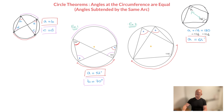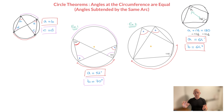Now remember, since angle A and angle B were both angles at the circumference subtended by the same arc, we can use the theorem we saw earlier to state that B is also equal to 64 degrees. And there we go. Remember: angles at the circumference of a circle are equal if they're subtended by the same arc.